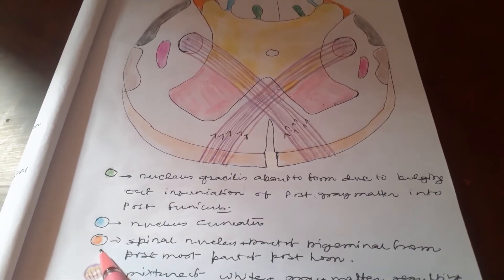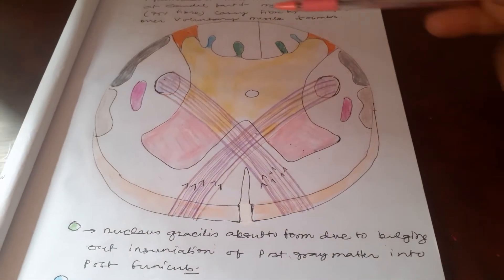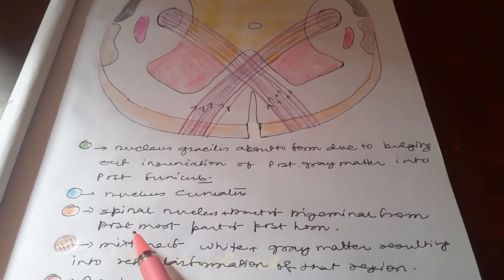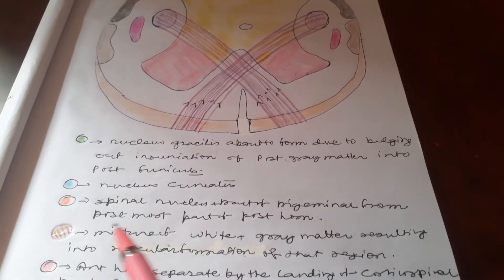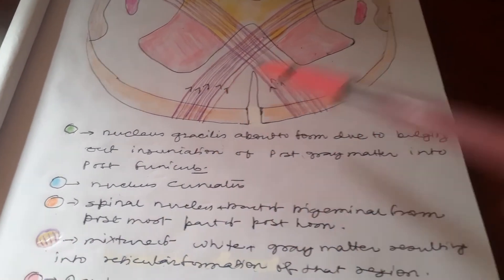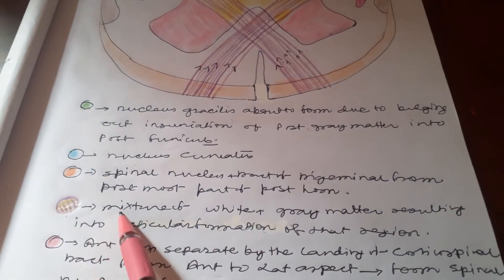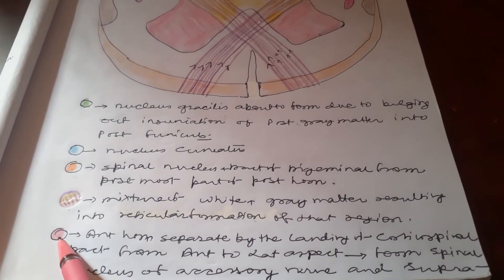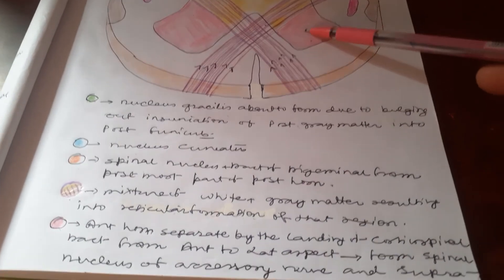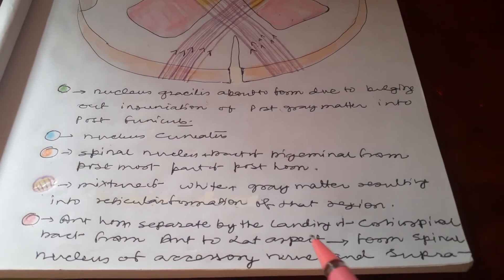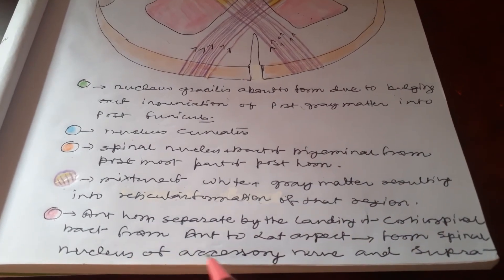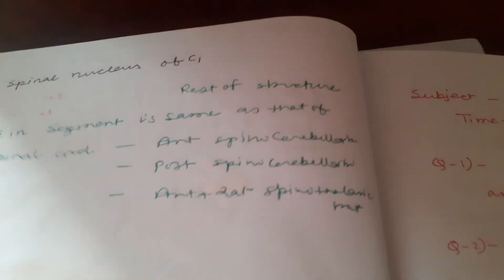The orange one represents the spinal nucleus — the spinal nucleus and tract of trigeminal form the posterior-most part of the posterior horn. The mixture of white and grey matter results in the reticular formation of that region. The anterior horn, shown in pink, is separated by the landing of the corticospinal tract from the anterior to lateral aspect, forming the spinal nucleus of the accessory nerve and the supraspinal nucleus of C1.